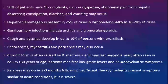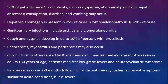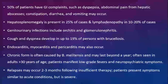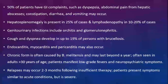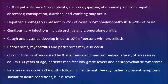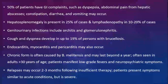Brucellosis also involves the gastrointestinal tract. 50% of patients may have dyspepsia, abdominal pain (possibly due to liver abscess), constipation or diarrhea, and vomiting or nausea. 25% of cases may present with hepatosplenomegaly, and in up to 20% there may be associated lymphadenopathy. When the genitourinary system is affected, patients may present with orchitis, epididymal orchitis, or glomerulonephritis. When the respiratory tract is involved, cough and dyspnea may be seen in up to 19% of cases. Cardiovascular involvement may present as endocarditis, myocarditis, or pericarditis.